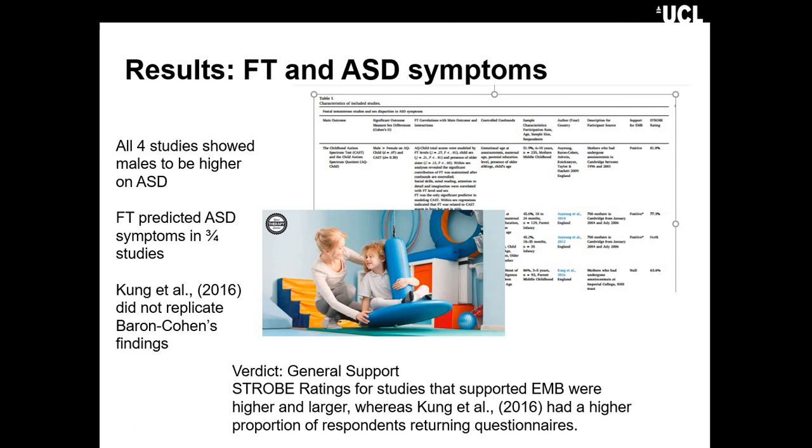The general verdict of fetal testosterone and autism is that there is support. The vast majority of studies, the vast majority of the population tested, showed support for the extreme male brain theory of autism. When looked at in terms of bias and quality, the studies that supported extreme male brain theory were larger and the quality was higher.